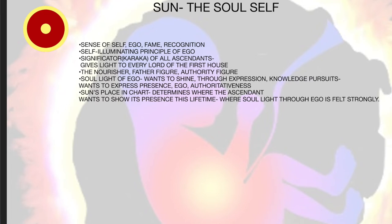Welcome again people. So we spoke about the soul, the sun, the self, the ego. The ego is basically signified in Vedic Astrology by the sun. The sun is also the soul. Now why these two dichotomies, these two aspects? One is called the ego, one is called the higher ego or the higher self.